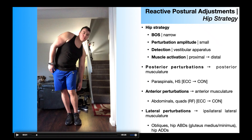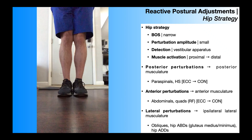If we take a look at my left hip, it's actually in relative abduction. So for the left hip, it's actually the adductors that are going to need to contract in order to help bring the left hip back to neutral. And of course, the base of support is still narrow.